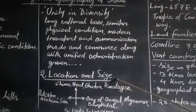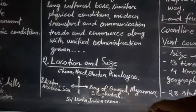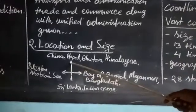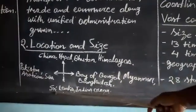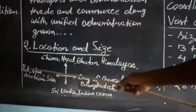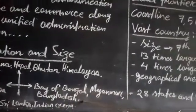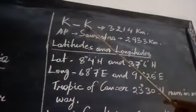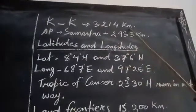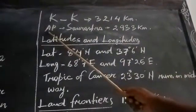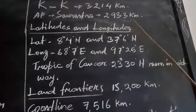Now we shall see the location and size of India — where India is located. We see in the figures and maps the boundary lines of India. In the northern side there are China, Nepal, Bhutan, and the Himalayas; in the southern side Sri Lanka and the Indian Ocean; in the western side Pakistan and the Arabian Sea; and in the eastern side the Bay of Bengal, Myanmar, and Bangladesh. From Kashmir to Kanyakumari it is 3,214 kilometers in length.